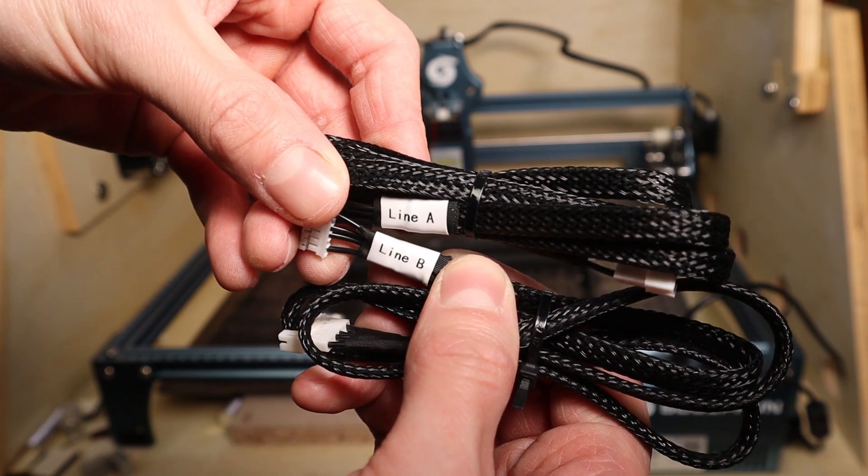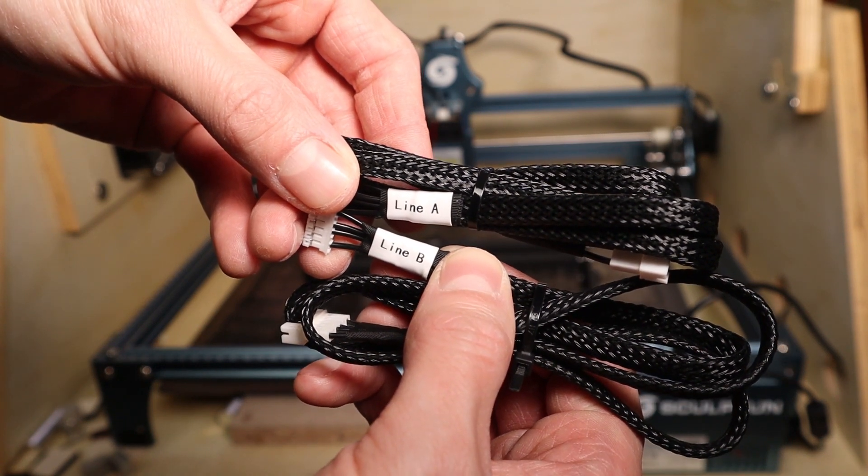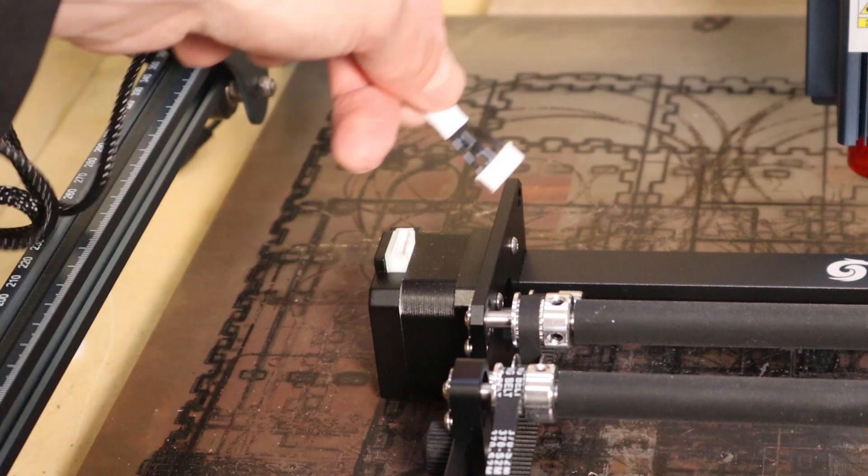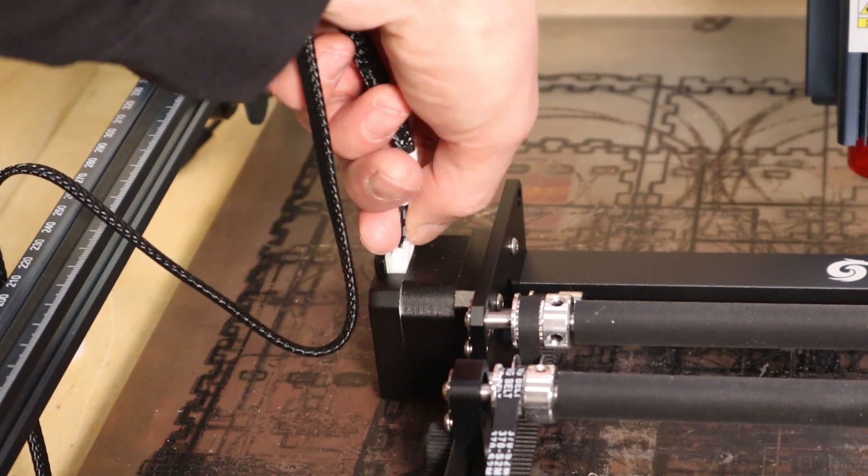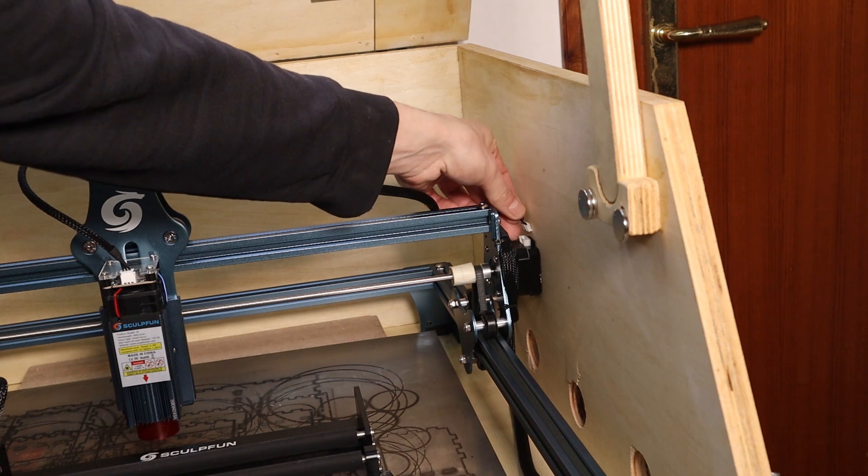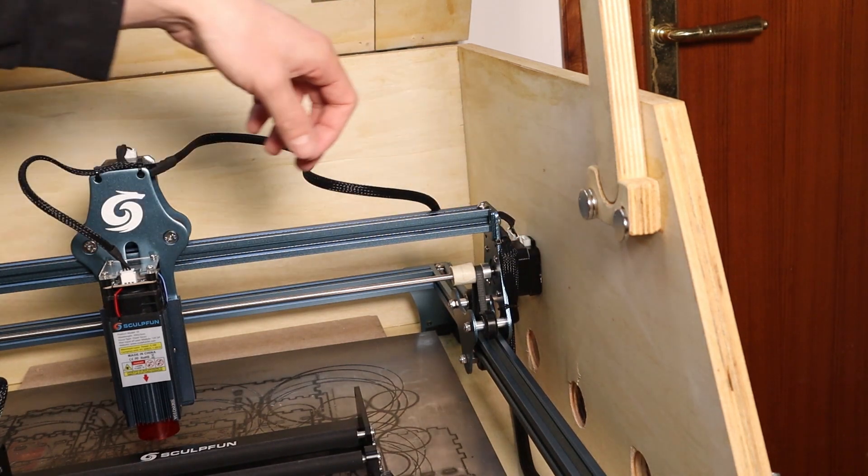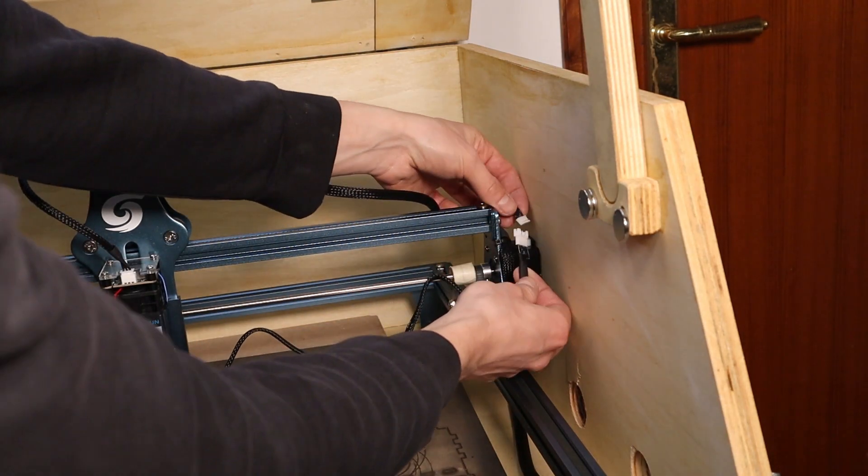In the package you also get two cables: one to use with the Sculpt Fun and Atomstack machines, and the other to use with Ortur and NEJE laser engravers. Connection is easy - one end goes into the stepper motor and the other end plugs in instead of the X-axis motor on the machine.